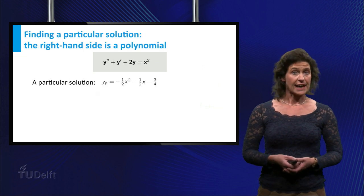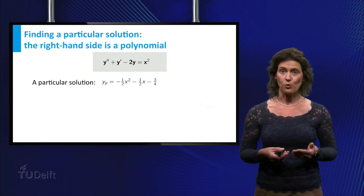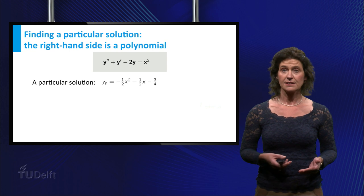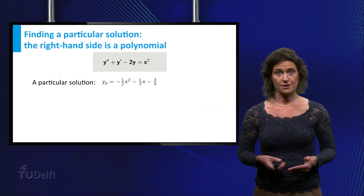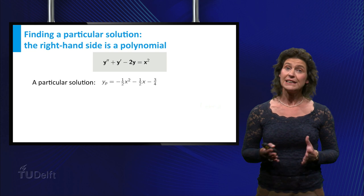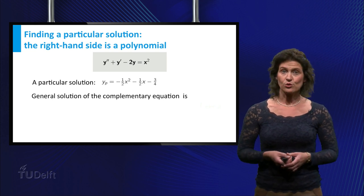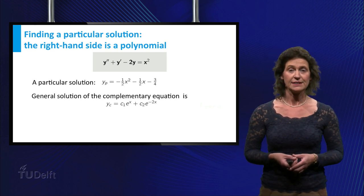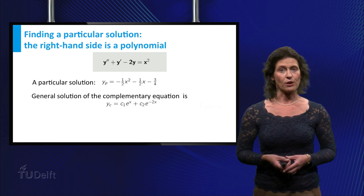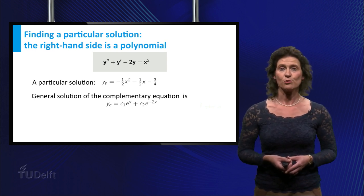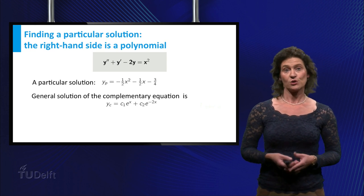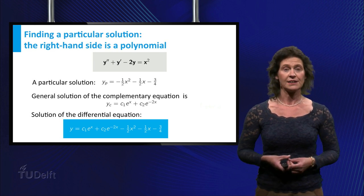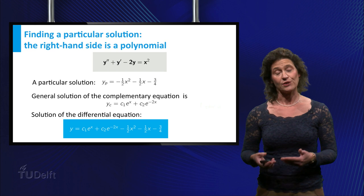In our example, you found the particular solution y equals minus 1 half times x squared minus 1 half times x minus 3 fourth. You can check that the general solution of the complementary equation turns out to be y equals c1 times e to the power x plus c2 times e to the power minus 2 times x. So the general solution of your second-order non-homogeneous differential equation is the sum of y_c and y_p.